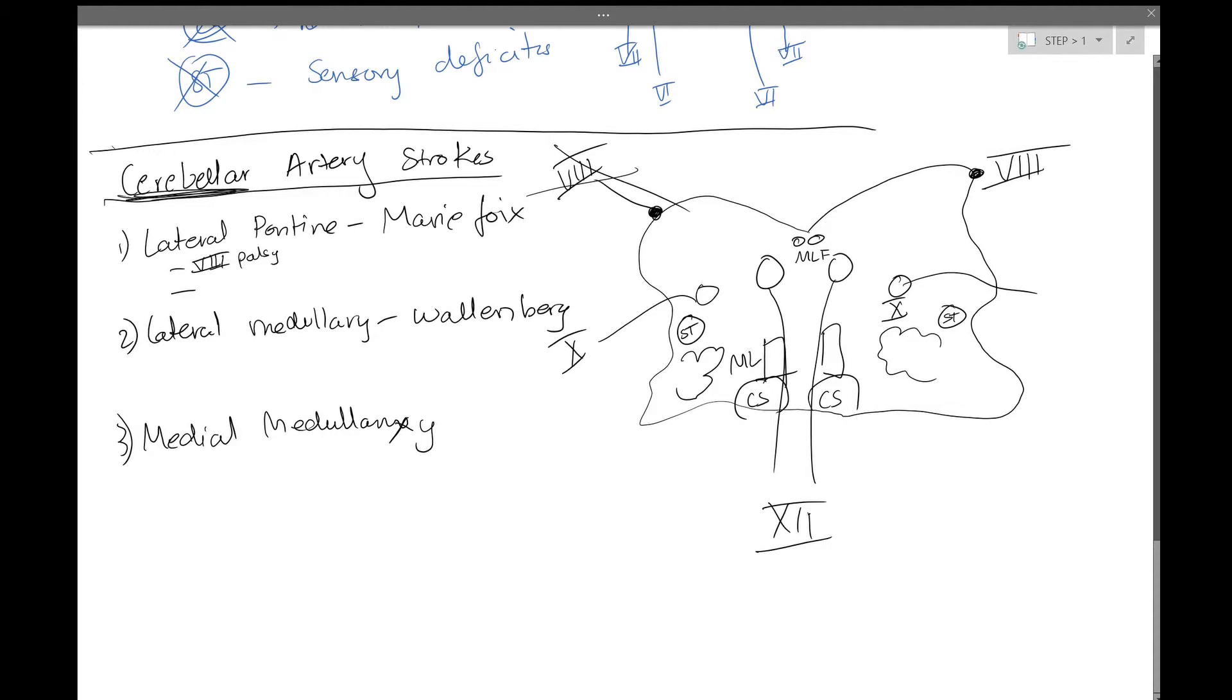Along with, because now we're in the cerebellar arteries, there's going to be some ataxia, potentially. And so a palsy will also give us some vertigo or hearing loss. And then we could potentially get some sensory losses from the spinothalamic tract. So this would be sensory deficit.